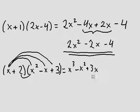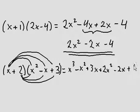2 times x squared is 2x squared. 2 times negative x is negative 2x. 2 times positive 3 is positive 6.